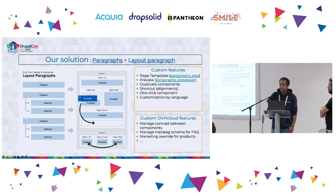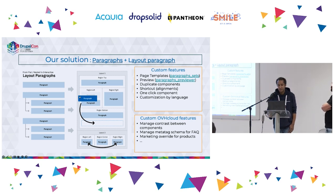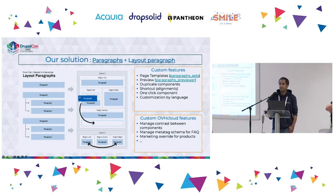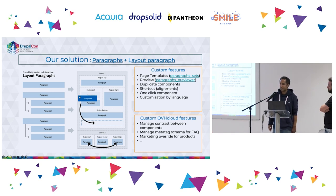ParagraphSet is a module that allows you to configure with YAML some templates of pages, by defining which page will have any kind of paragraph type, and you can configure some default data inside. We added some previews, some shortcuts like alignments, and one-click components — for example, if you have a component that doesn't need configuration, you don't want to open a form and edit settings, you just want to insert the component easily and quickly. And of course, some customization by language. We made some custom OVH Cloud features related to our design system, like contrasted features.